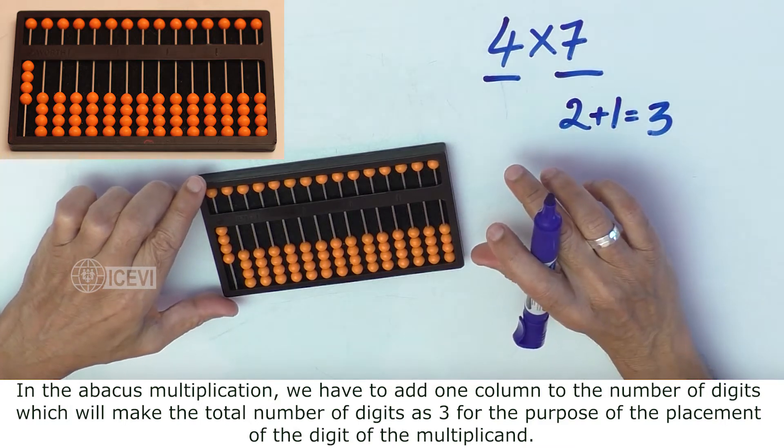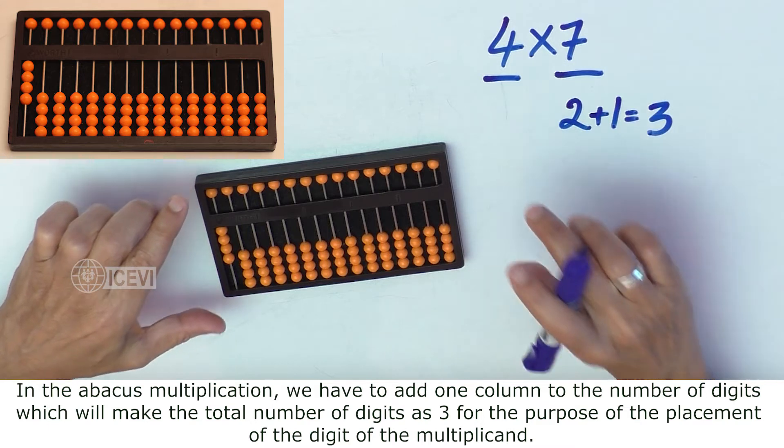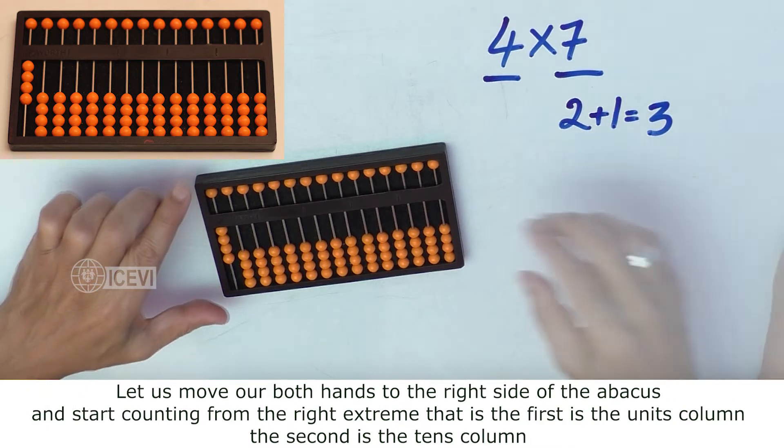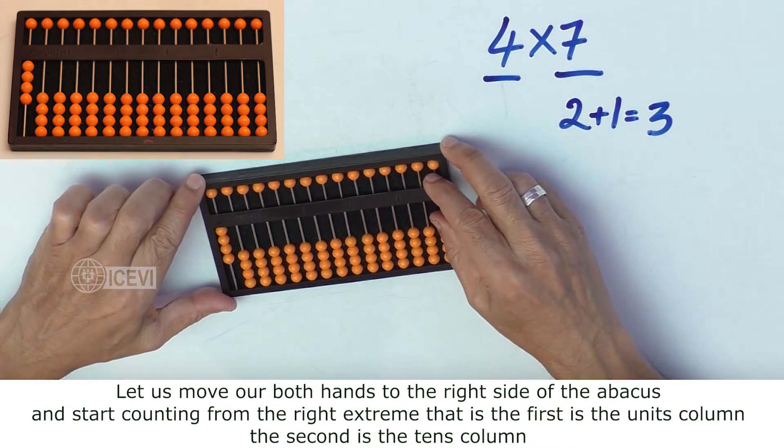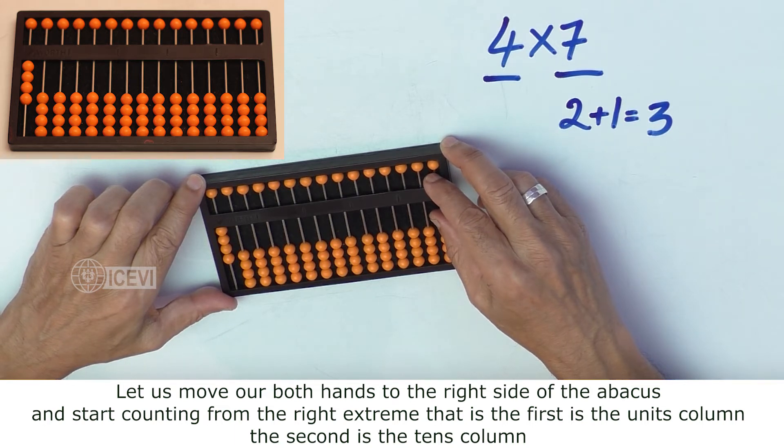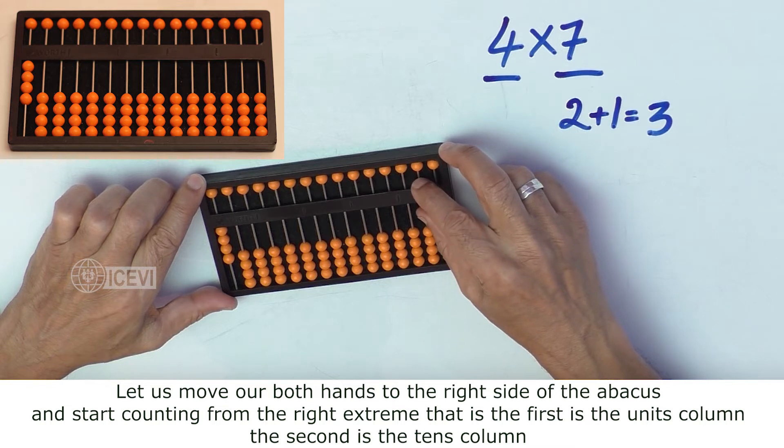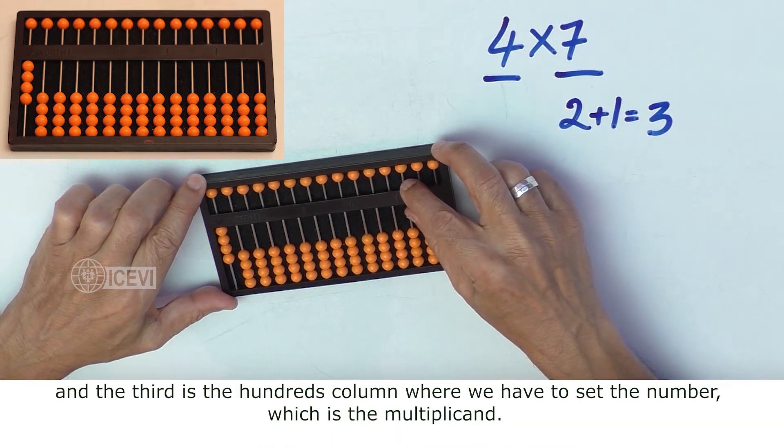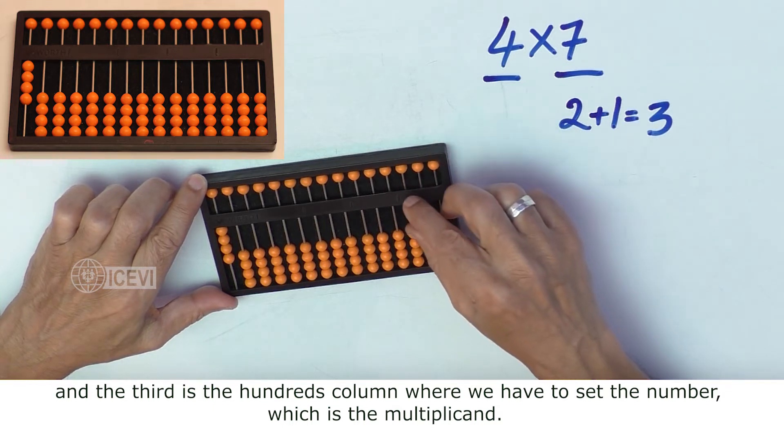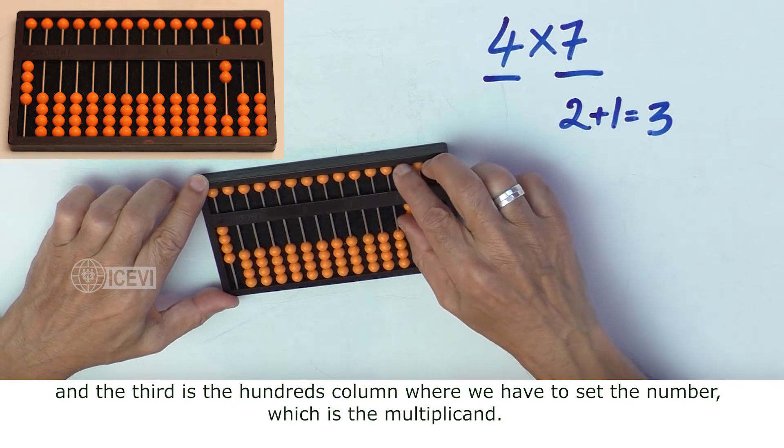This is for the purpose of the placement of the digit of the multiplicand. Let us move to the right side of the abacus and start counting from the right extreme: the first is the units column, second is the tens column, and third is the hundreds column, where we have to set the number which is the multiplicand. We have to set the 7 here.